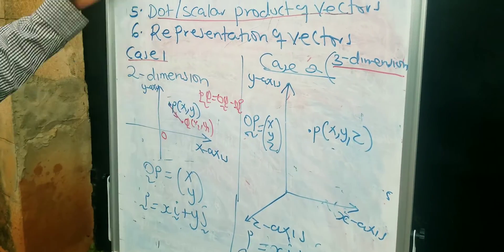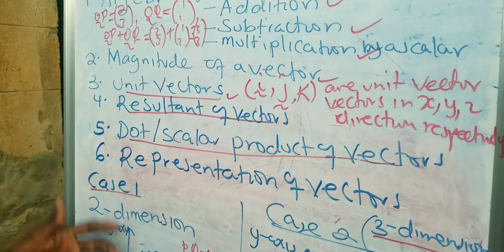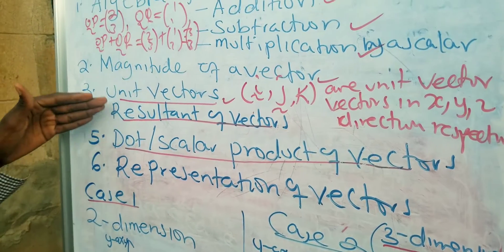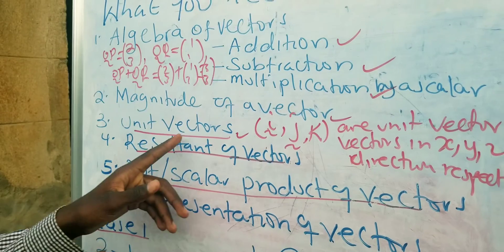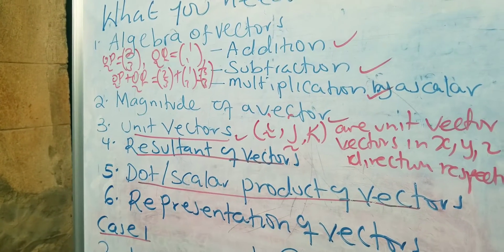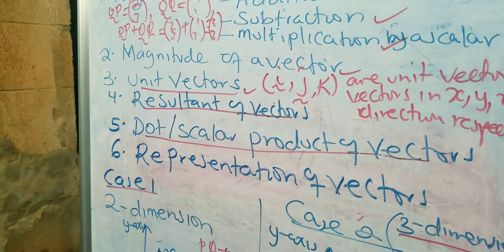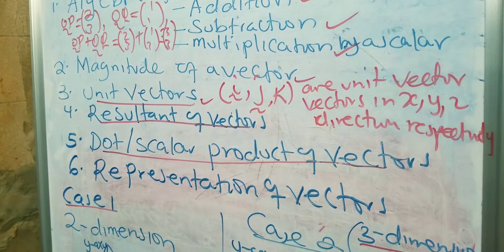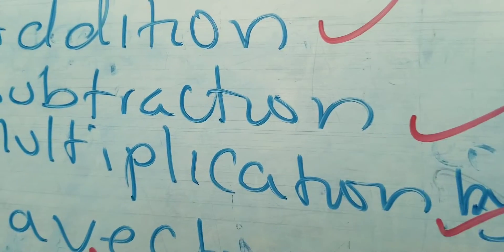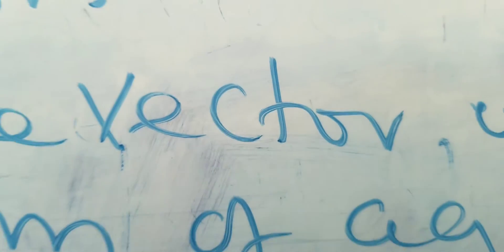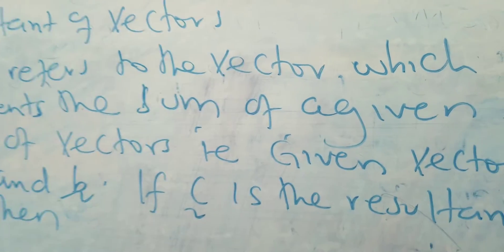Since the topic is not very new, we want to move ahead and do some examples where we shall discuss the unit vector in detail, the resultant of vectors, and then the dot product of vectors. We now cross on to the explanation of unit vectors, resultant vectors and dot product.